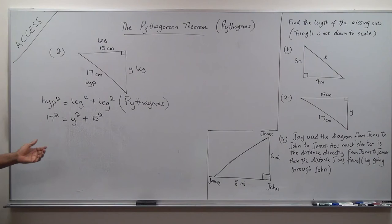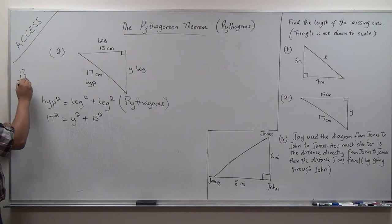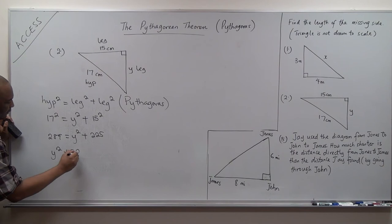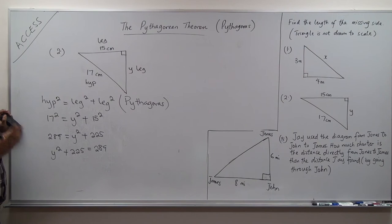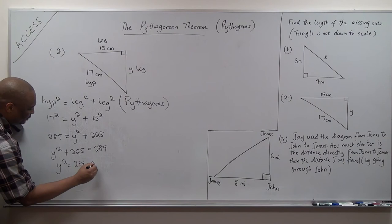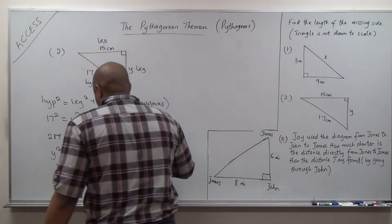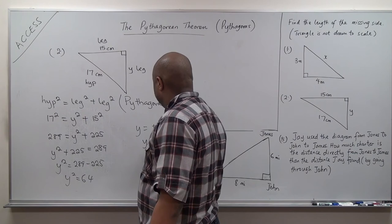17 squared gives us 289. So 289 equals y squared plus 225. Therefore y squared equals 289 minus 225. 9 minus 5 is 4, 8 minus 2 is 6 — so y squared equals 64. Y equals the positive square root of 64, which is 8 centimeters.